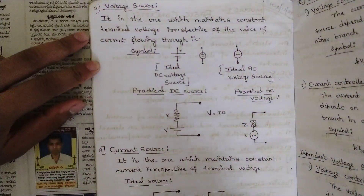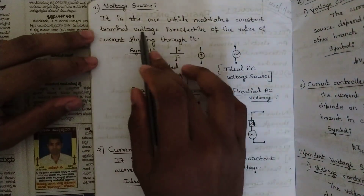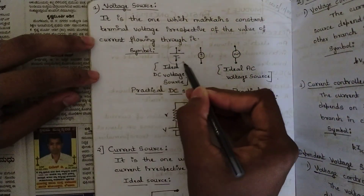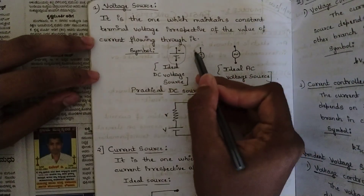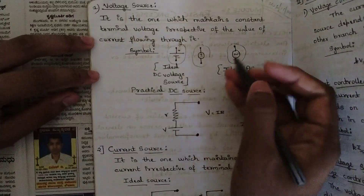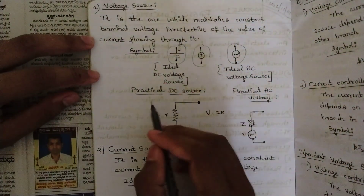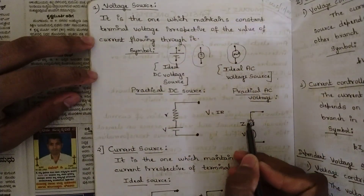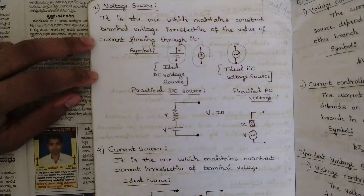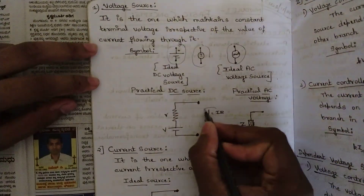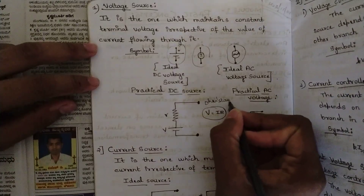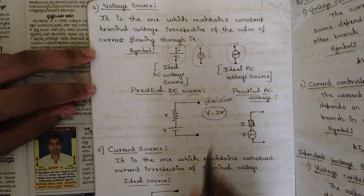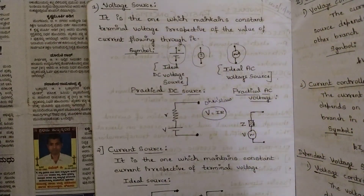A voltage source maintains constant terminal voltage irrespective of the value of current flowing through it. The symbol can be written in several ways — for an ideal AC voltage source and for DC sources. A practical DC source is given through a series resistor or impedance. The basic equation from Ohm's law, V = IR, is fundamental to this entire subject.